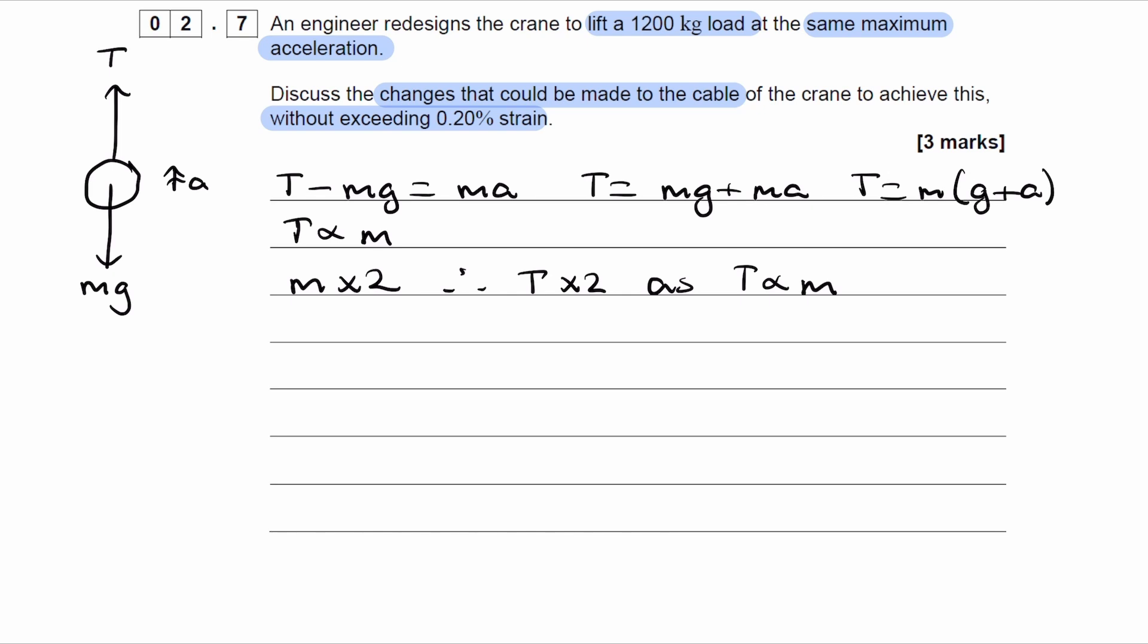So if the tension doubles, how do we need to modify the cable to not exceed that 0.2% strain? So Young modulus, stress over strain, the strain is constant. We're not going to be exceeding that 0.2%. So that means that Young modulus is proportional to F over A, and therefore F, force or tension, is proportional to EA. So our force doubles, we can achieve that if the Young modulus were to double. So if we use a material which has twice the Young modulus, or if we were to double the cross-sectional area, each of those things individually will double the maximum force that the wire can experience.